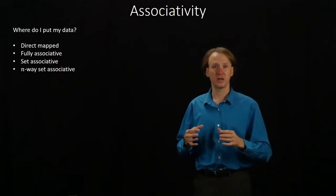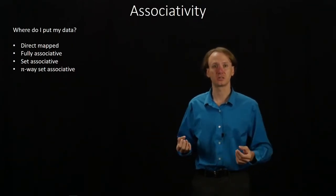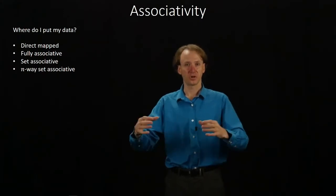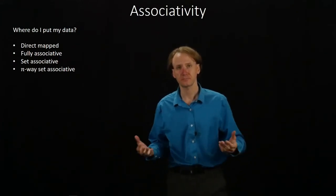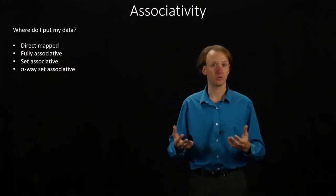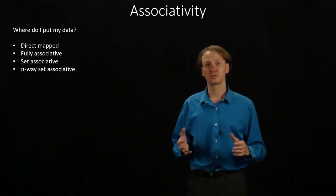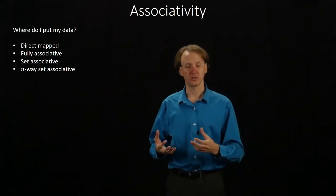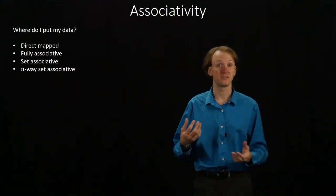An N-way set associative cache takes the opposite approach and says, instead of there being, say, four different chunks where we might put data, we will only put four pieces of data inside any of those boxes. Same sort of thing, different approach to the same problem. The set associative methods are the most popular because they don't take too long to find your piece of data and you don't end up with too many conflicts between pieces of data.